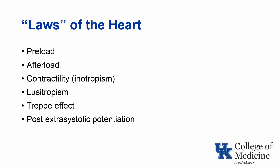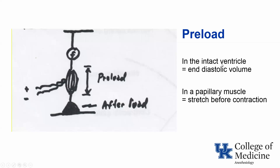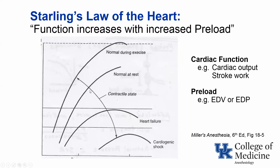Let's turn to the so-called laws of the heart. The most important are preload, afterload, contractility, and lusitropisim. Preload in the intact ventricle is the end diastolic volume; in the papillary muscle preparation, it's the stretch before the papillary muscle is stimulated. Starling proposed his law, which says that as you increase the filling, the function increases. This is reflected on the familiar curve relating cardiac function—expressed either in cardiac output or stroke work—versus preload, expressed either as end diastolic volume or end diastolic pressure. With good contractility, the curve is steep and peaks at a high value, whereas with depressed ventricular function, the curve becomes more shallow.